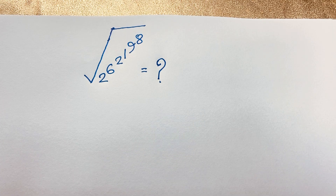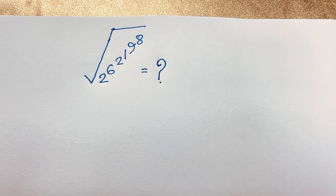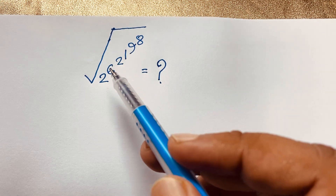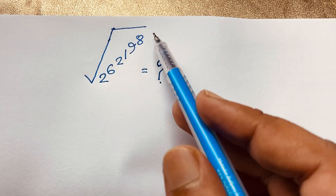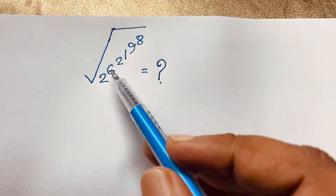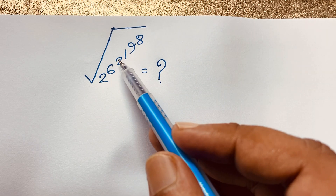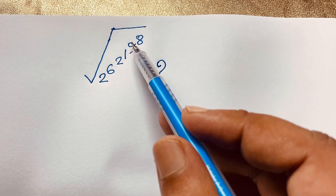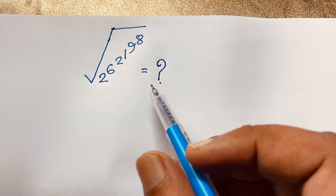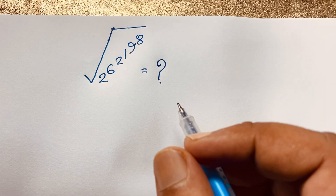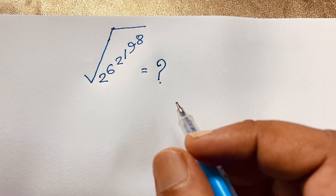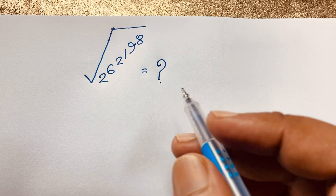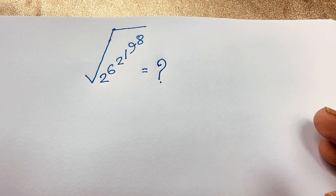Everyone, in this video we have solved an interesting math problem. This question is under a square root — it is a big number: 2 to the power 6, 6 to the power 2, 2 to the power 1, 1 to the power 9, 9 to the power 8. So how to solve this interesting math problem?